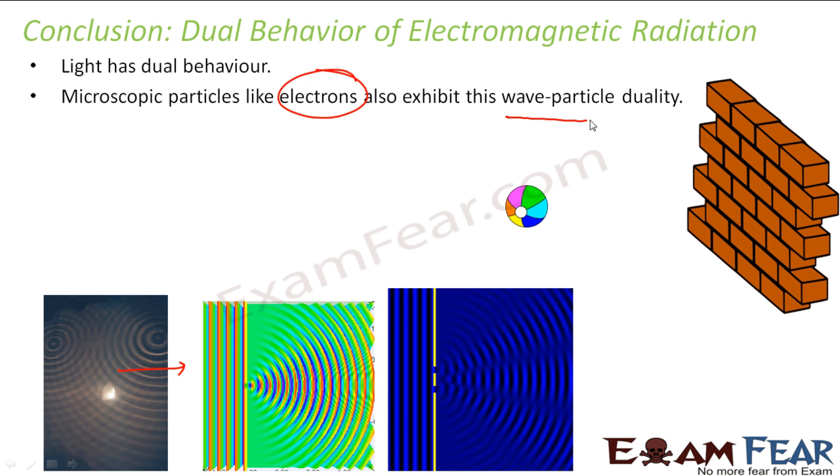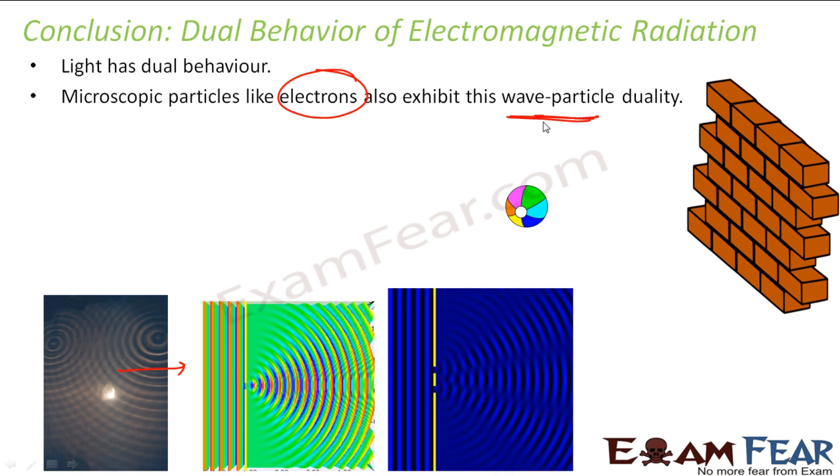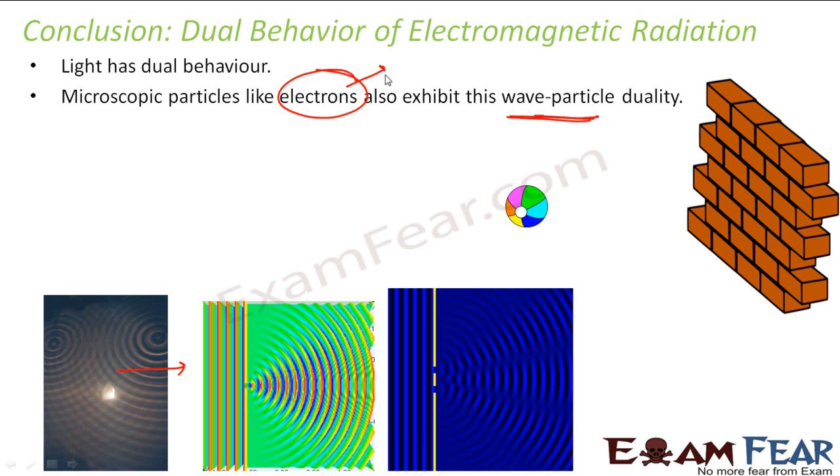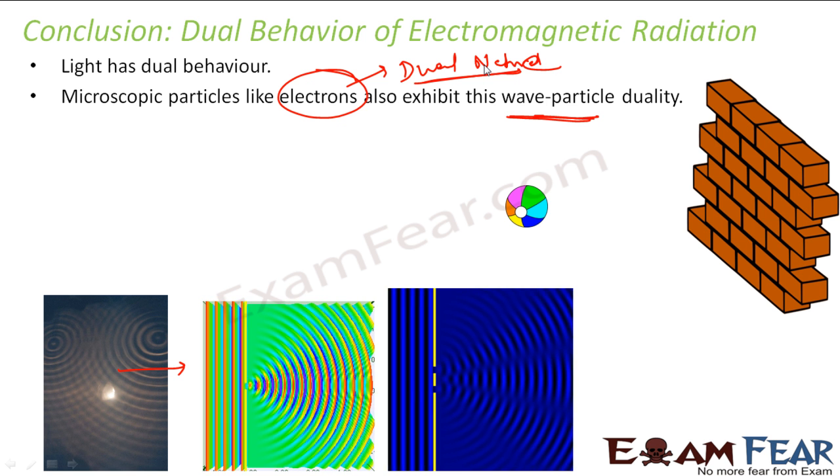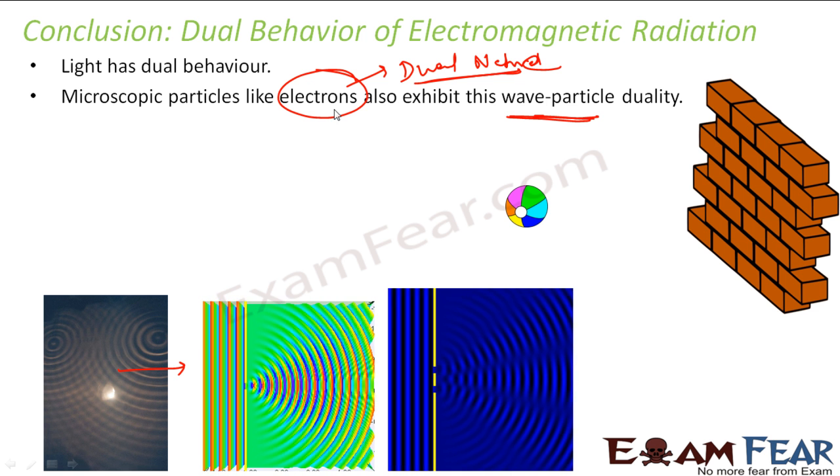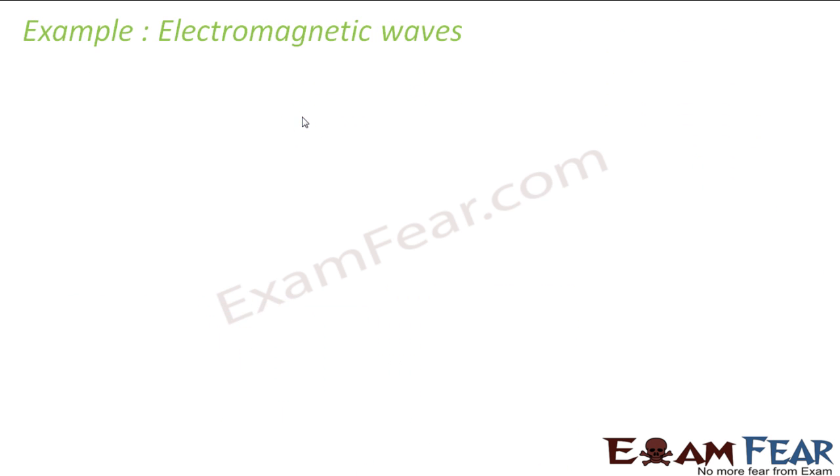Also, microscopic particles such as electrons also behave with wave-particle duality. The electrons also have dual nature. And this is something which will help us in forming the quantum model. Please remember, electrons also have dual nature. We will take some examples now.